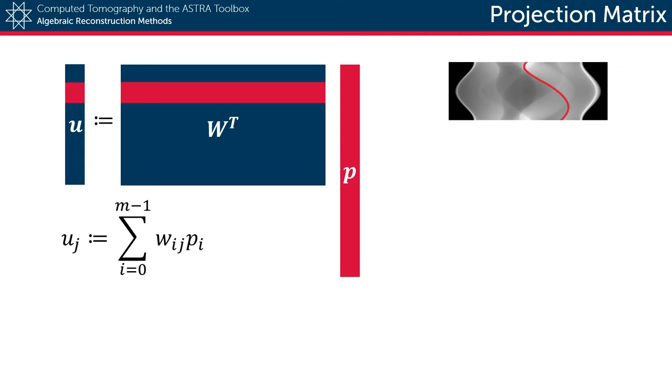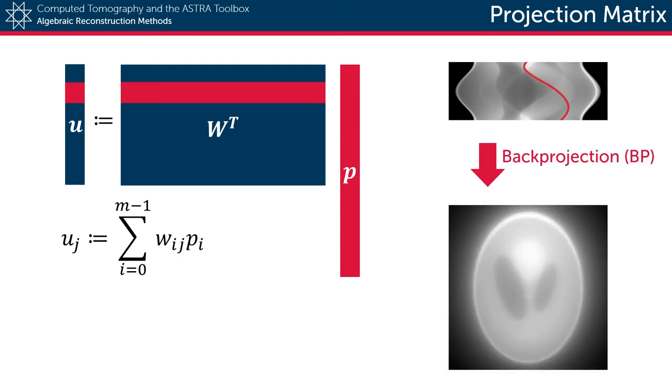If we then compute this multiplication for all the voxels, we get what we call a back projection, as you can see in this image here.